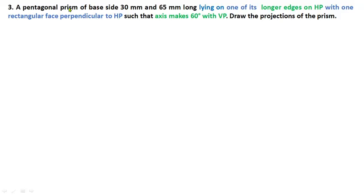In this session we are discussing a pentagonal prism which is inclined to VP and parallel to HP. The previous two sessions covered a pentagonal prism with a corner on HP and base edge on HP with the axis inclined to HP. Now the axis is inclined to VP — that is the major change. The problem: a pentagonal prism of base side 30 mm and 65 mm long, lying on one of its longer edges on HP, with one rectangular face perpendicular to HP, such that the axis makes 60 degrees with VP.